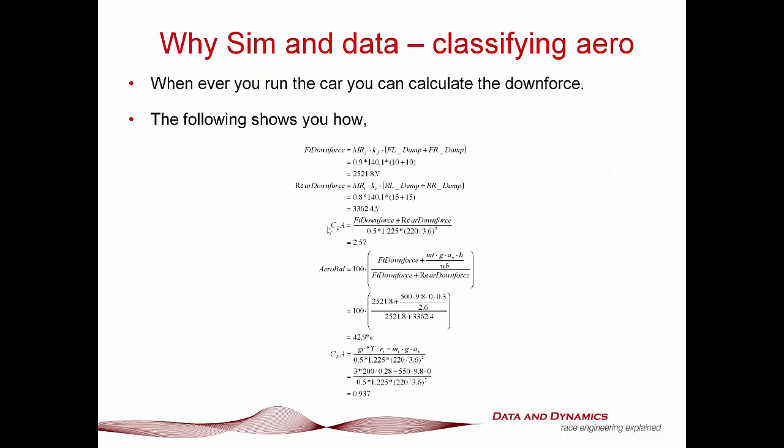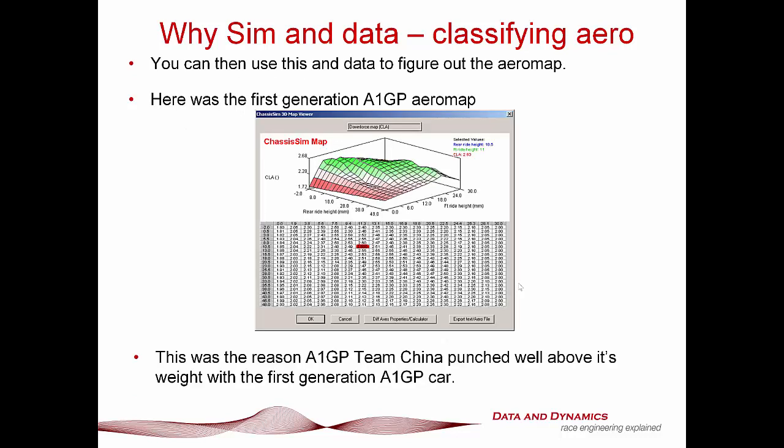Why sim and data? Classifying aero. Listen very carefully here — every time you run the car, every suspension pot you've got on the car is a load cell. What can you do with that load cell? You can calculate the downforce. This is a very simple example that I present to attendees of the ChassisSim Bootcamp to work through — no hocus pocus, it's all very simple high school mathematics. Using what I've just shown you is the basis of how you figure out an aero map. And here is the first generation A1GP aero map.